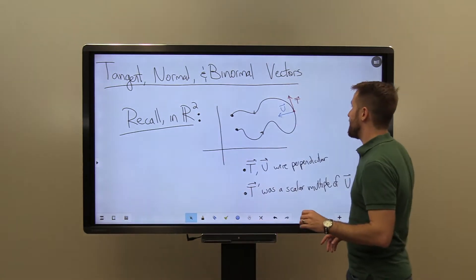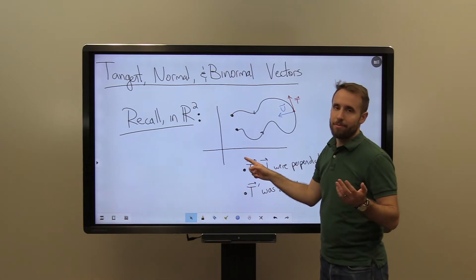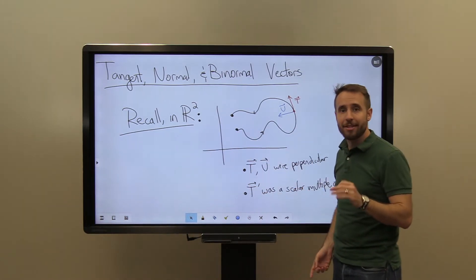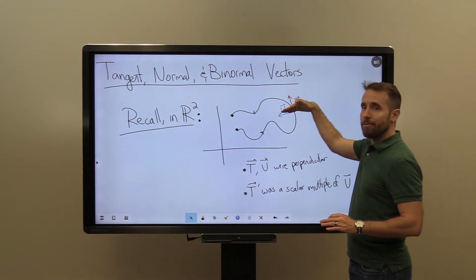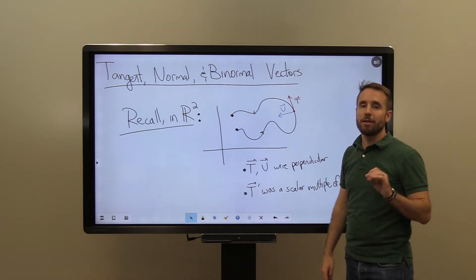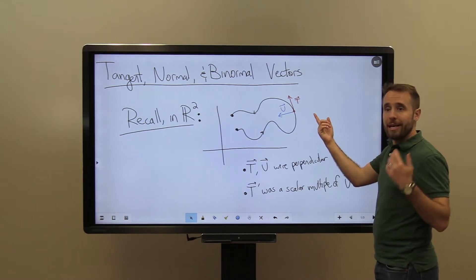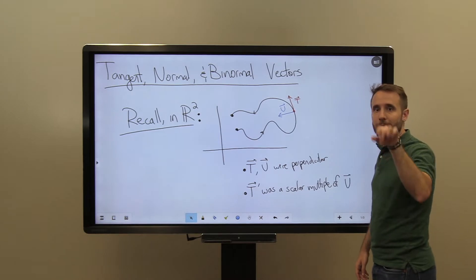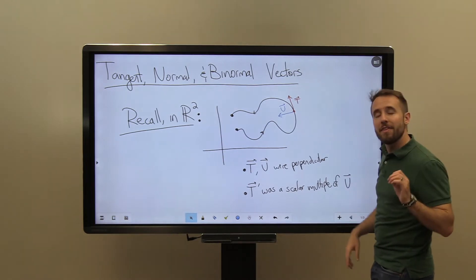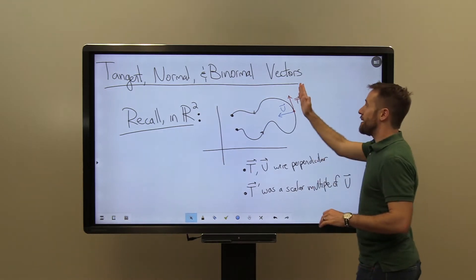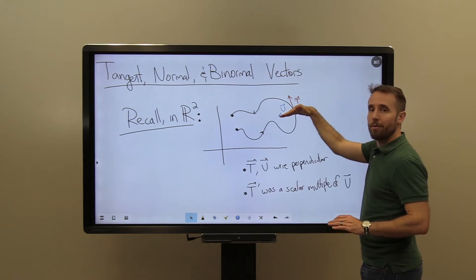Recall that in two-dimensional space, we had the idea of a parametrized curve. When we had such a parametrized curve, we could calculate a unit tangent vector T and a unit normal vector U at each point along the curve. Specifically, we would calculate T, which was x prime divided by the length of x prime, giving us this unit tangent vector. Then the unit normal vector corresponded to a pi over 2 rotation counterclockwise. So that gave us our unit tangent and unit normal vector.